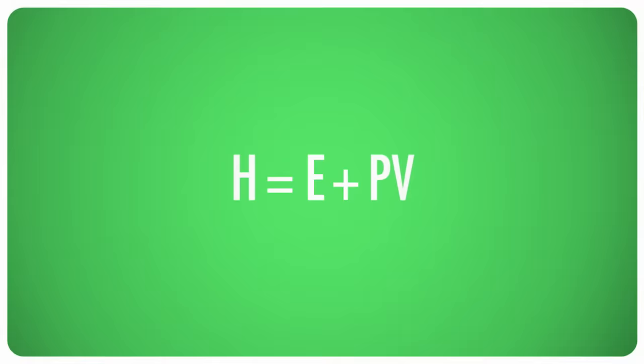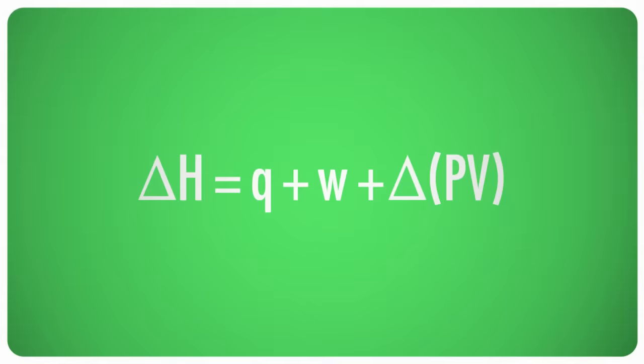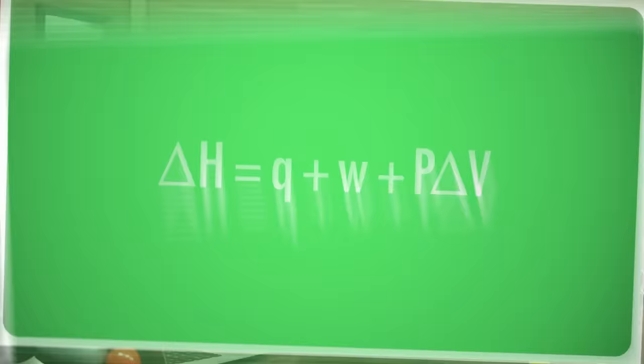Delta E, or change in energy, equals Q plus W, so we can replace that part, and then we can make two big, huge assumptions. First, that pressure is constant. Fortunately, despite talk of high and low pressure weather systems, atmospheric pressure really changes very little compared to the other terms in the equation. Constant pressure is a pretty good assumption here on the Earth's surface, so that last delta only applies to the volume. The second assumption is that the only work done in the system is the work that the pressure does to change the volume, known as pressure volume work. So W equals negative P delta V.